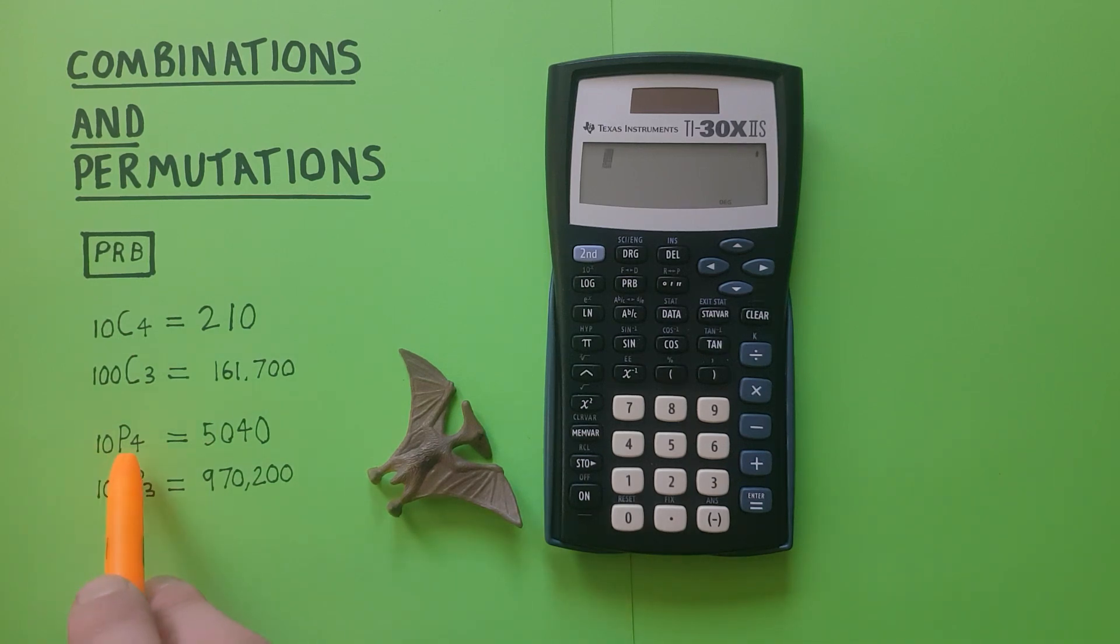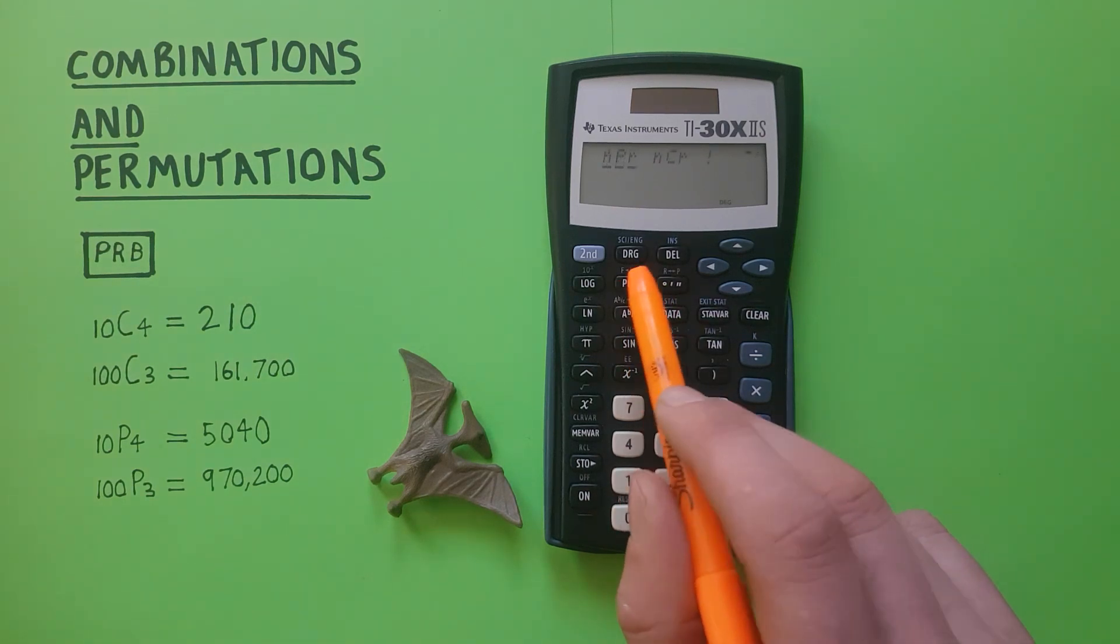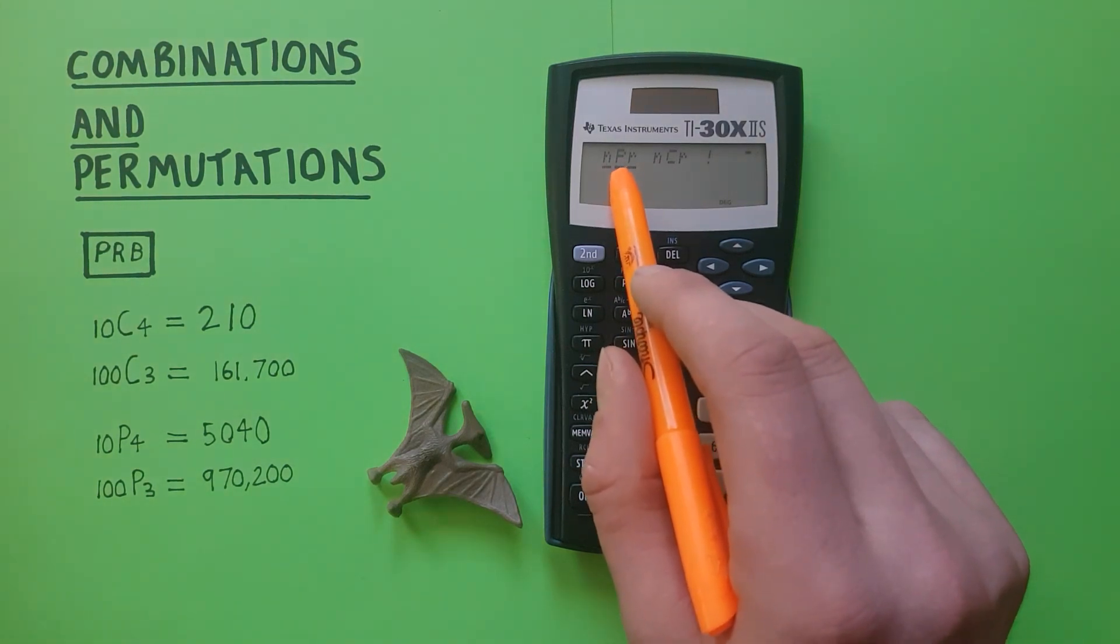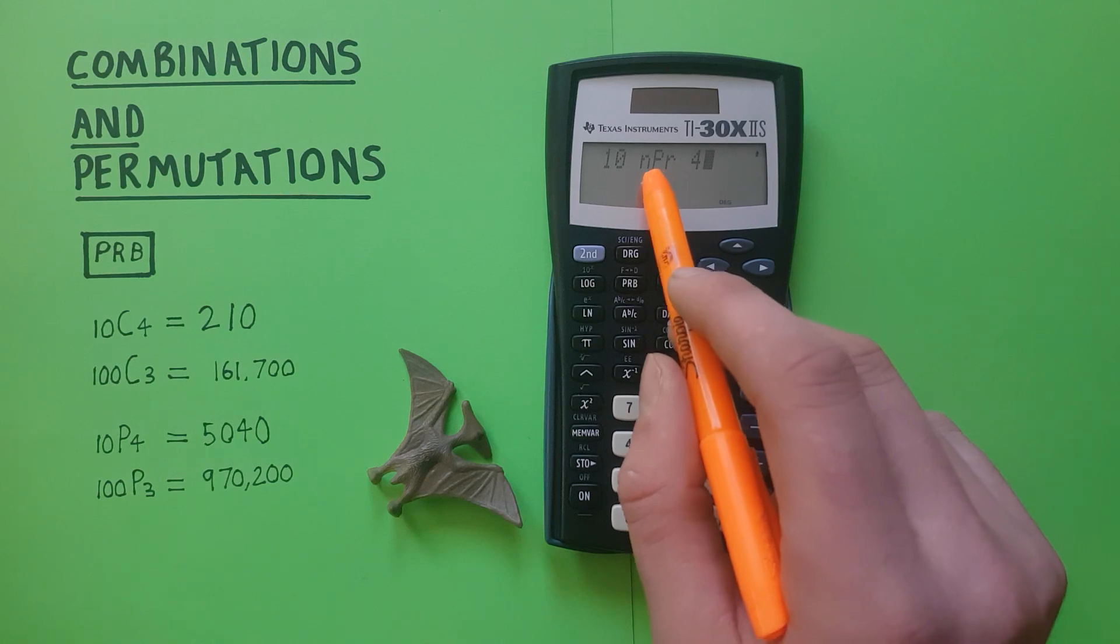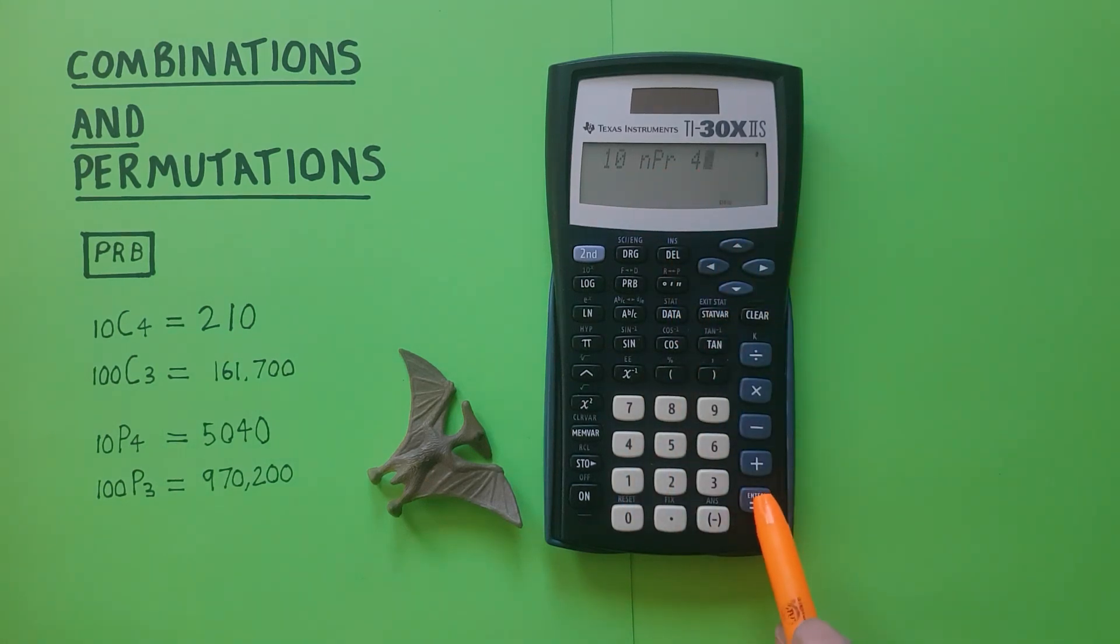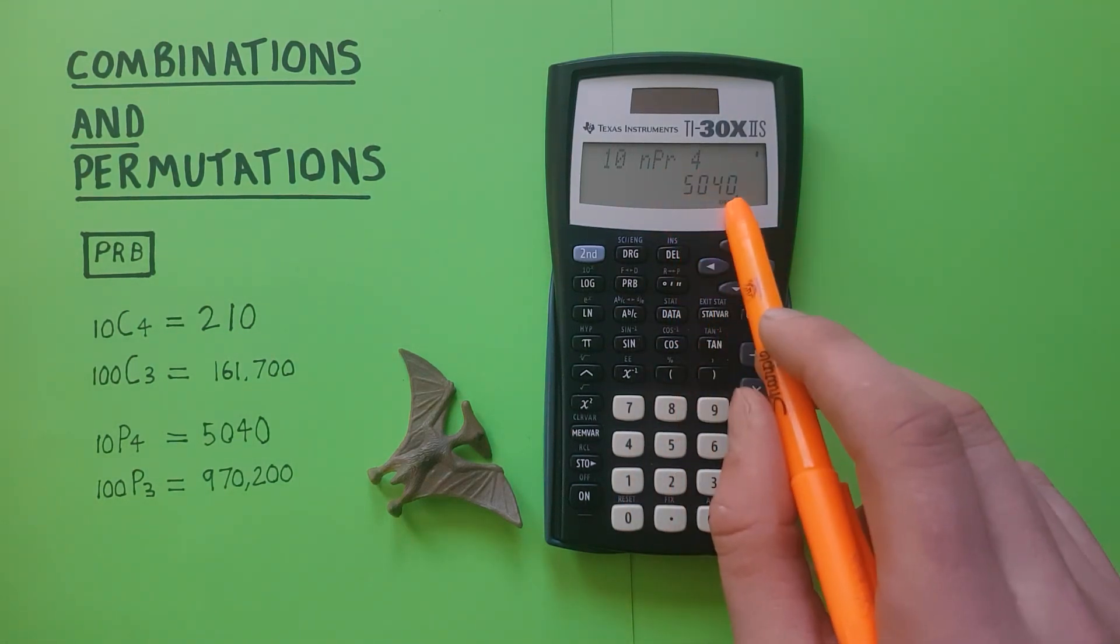So if we wanted to choose 4 objects from a set of 10 when the order does matter, again we place the 10 on the screen, press the PRB key and since the NPR is highlighted we press Enter and 4. There we go, 10 NPR 4 and equals 5040.